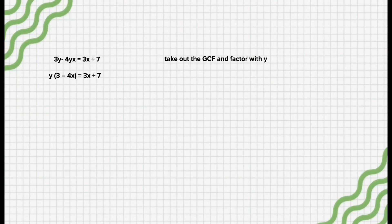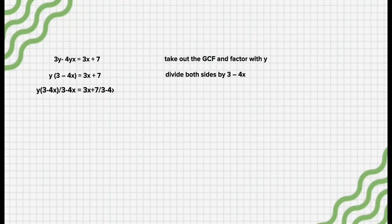Now, to get y by itself, we divide both sides by (3 - 4x). So, y(3 - 4x)/(3 - 4x) = (3x + 7)/(3 - 4x), which equals y.